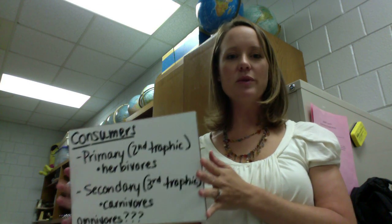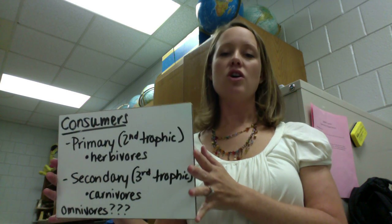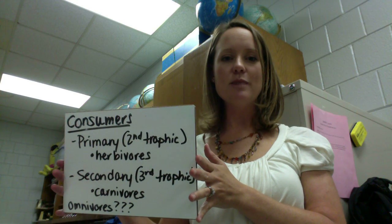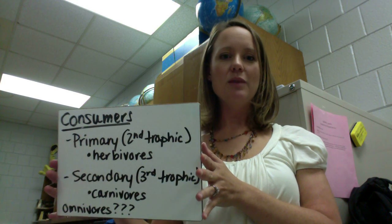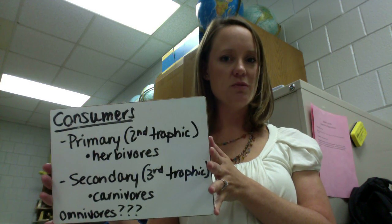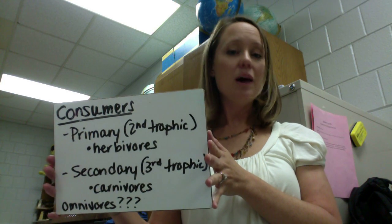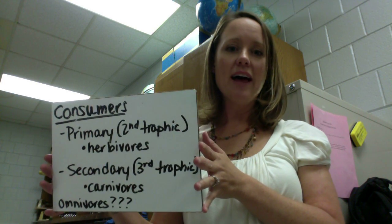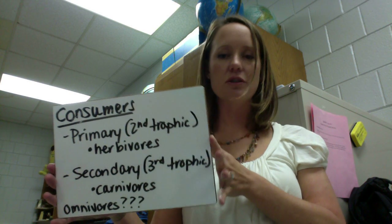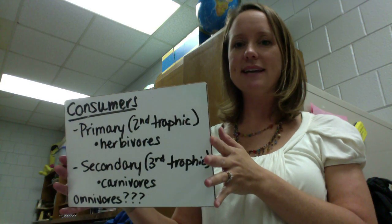At the second trophic level we have our primary consumers, generally known as herbivores because they eat the primary producers. Then we have secondary consumers at the third trophic level — they consume the primary consumers and are the carnivores. Omnivores can fall at either primary or secondary — second or third trophic level — depending on what they're eating, because omnivores eat both plants and animals.